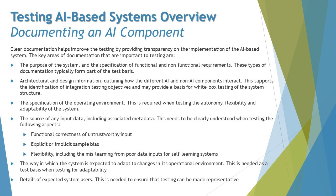The source of any input data, including associated metadata, needs to be clearly understood when testing functional correctness of untrustworthy inputs, explicit or implicit sample data — meaning both data considered valid and real-time data — and flexibility including mislearning from poor data inputs or self-learning systems. Testers need to know what challenges they may face with the data.